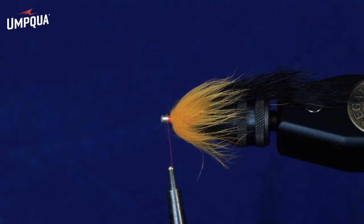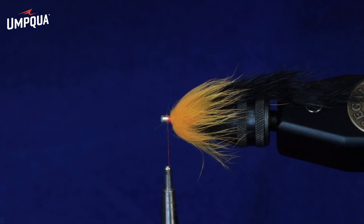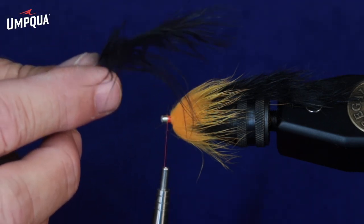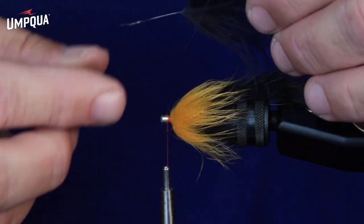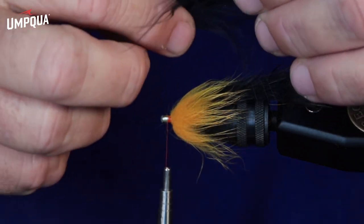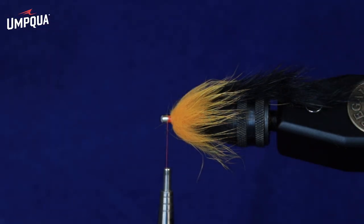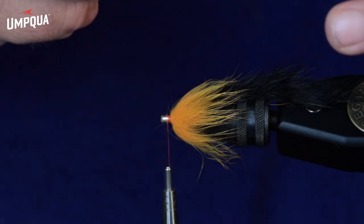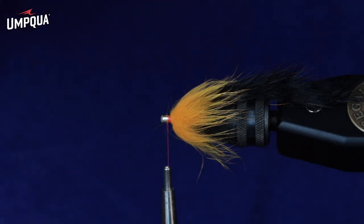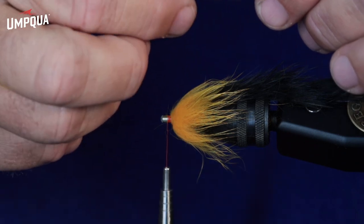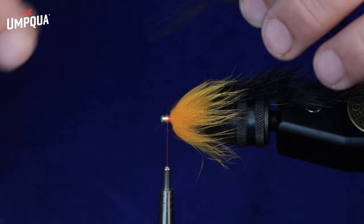What we'll do next is put in some marabou, and this is just a blood quill, a marabou blood quill, and I've stripped off the root, cleaned it all up, and I don't want a lot. Two things, too much rabbit, too much marabou, this fly isn't going to work, so make sure that you keep it to a minimum, just don't pile it on. So I'm going to add, secure this in.